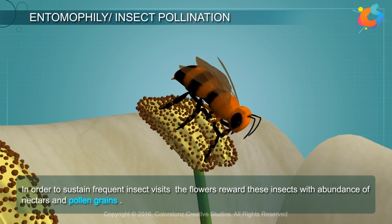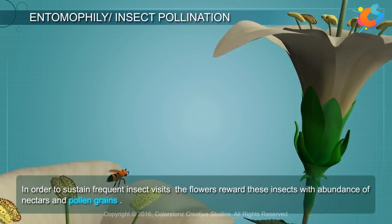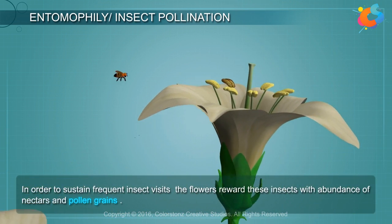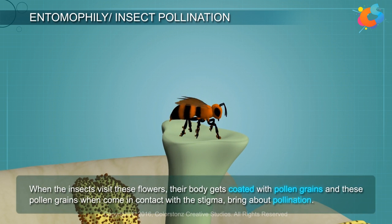In order to sustain frequent insect visits, the flowers reward these insects with an abundance of nectar and pollen grains. When the insects visit these flowers, their body gets coated with pollen grains. These pollen grains, when they come in contact with the stigma, bring about pollination.